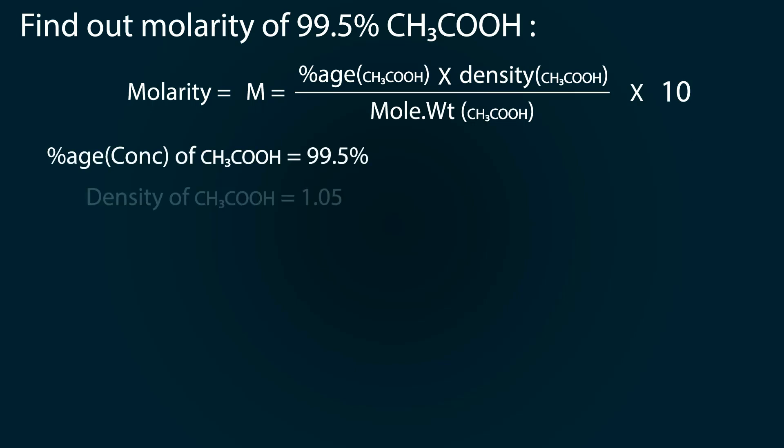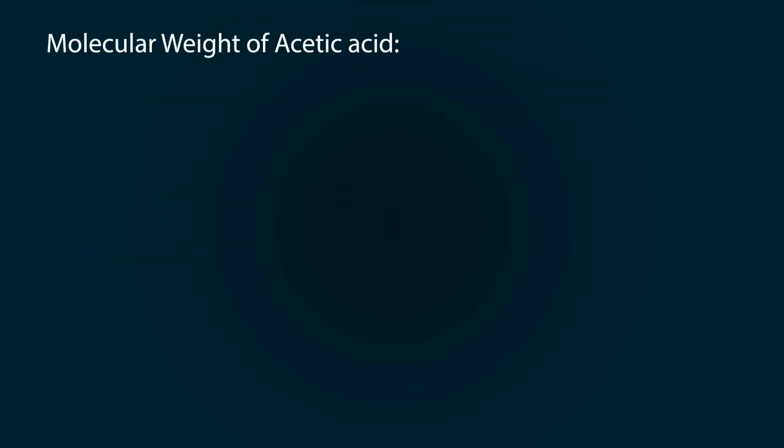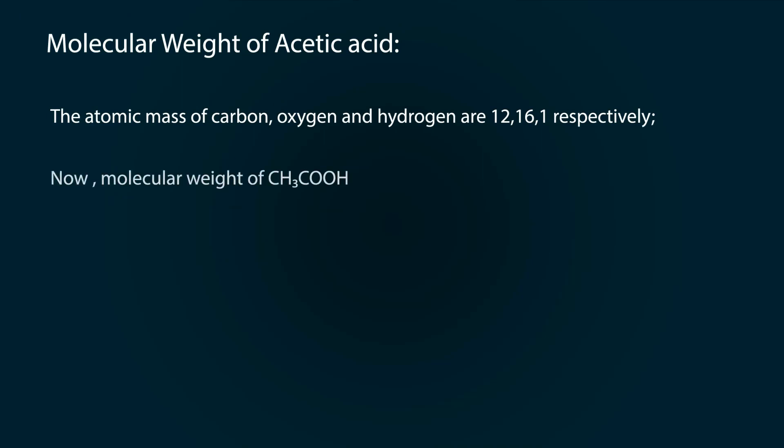.5%. The density of acetic acid is 1.05. Now let's find out the molecular weight of acetic acid. For that, first of all we have to find out the atomic masses of carbon, oxygen and hydrogen which are 12, 16 and 1 respectively.